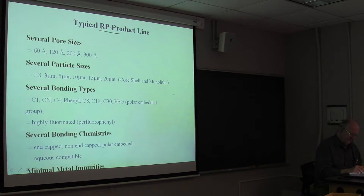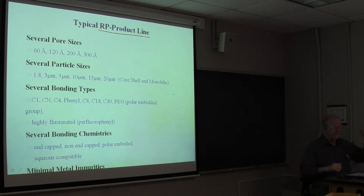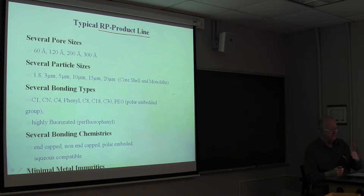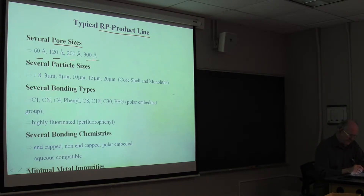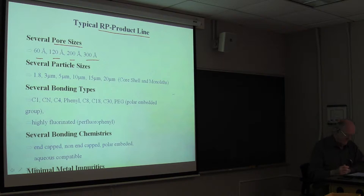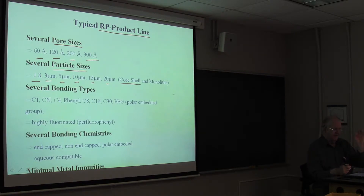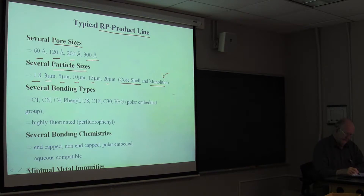A reverse-phase product line — from manufacturers like Waters, Supelco, Agilent, ResTech, or Phenomenex — is characterized by several factors. Pore size of the silica: 60, 120, 200, or 300 Ångstrom silicas are available across that range. Particle size: 1.8, 3, 5, 10, 15, or 20 microns. Then there are the so-called core-shell materials, which have a solid inner core and a porous outer layer, and silica monoliths — that's really only Merck.